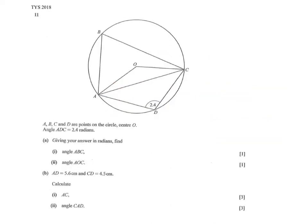Last question for the day. A, B, C, and D are points on the circumference on the circle. This angle is 2.4, meaning it is given in radians. A very important rule: 180 degrees equals pi radians. We need to give all angles in radian mode.